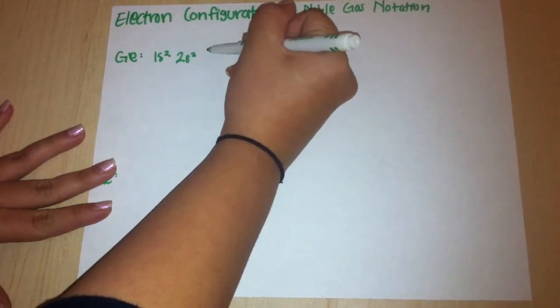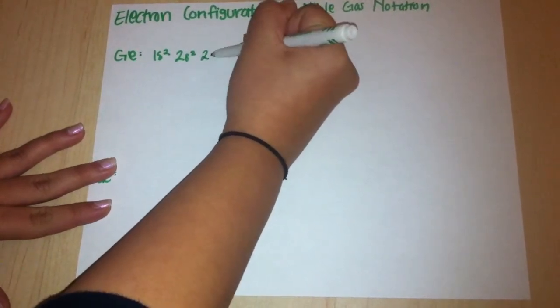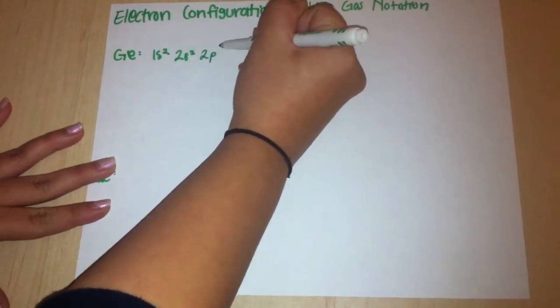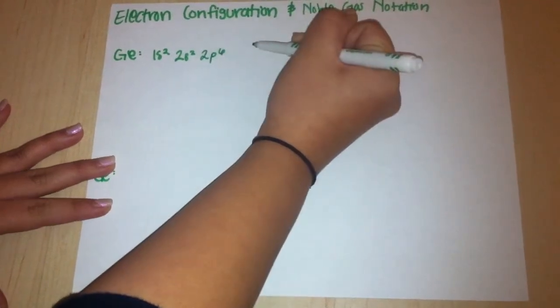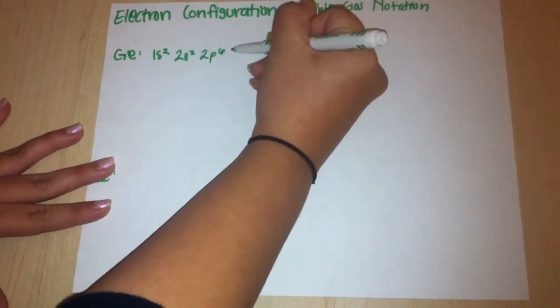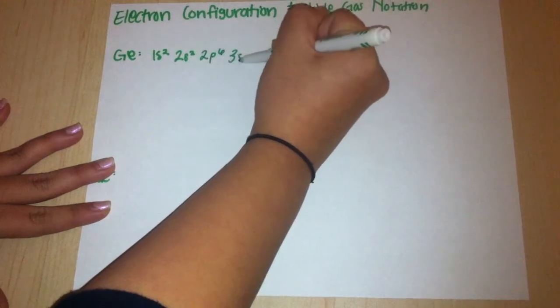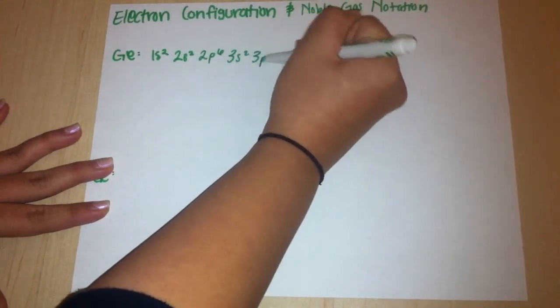Now we're on the P block. You would write 2 because we're on level 2, P since we're in the P block, and a 6 because there are six elements. After, you would go down to the third level and go through the same processes, writing 3s2, 3p6, and 4s2.